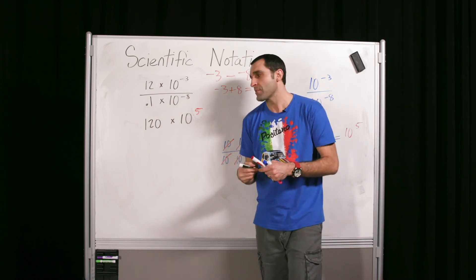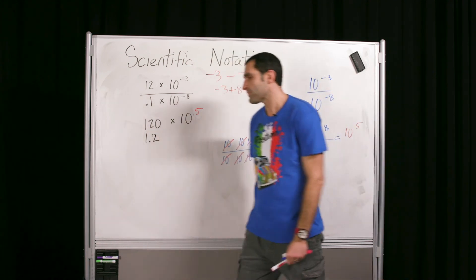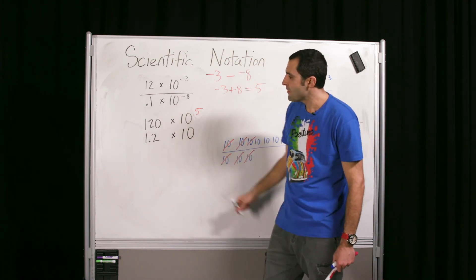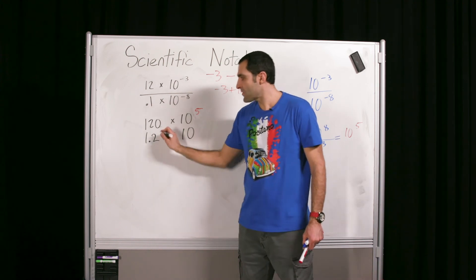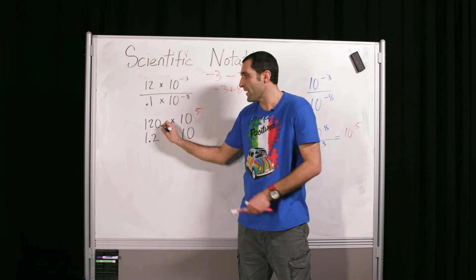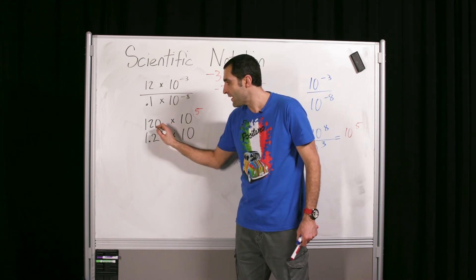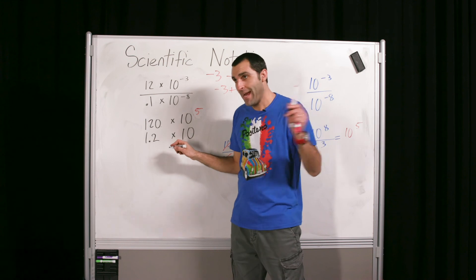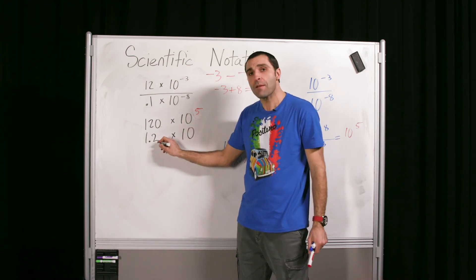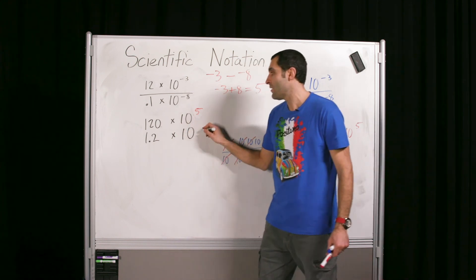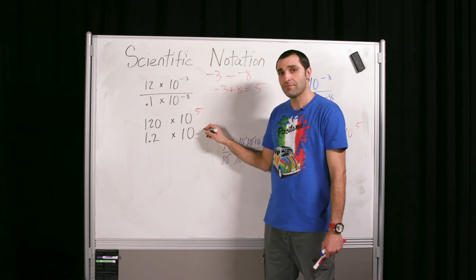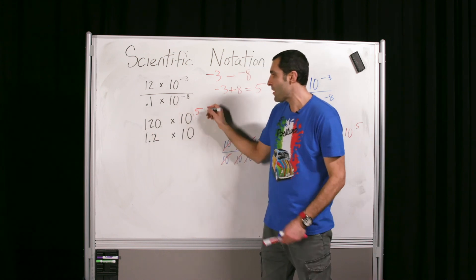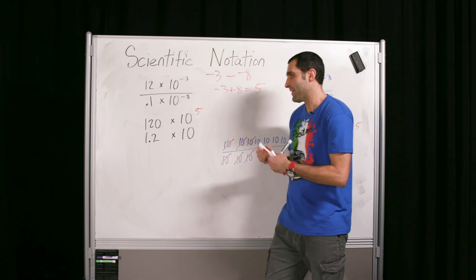Now, 120 is not in scientific notation, but 1.2 is — we don't need to say 1.20, same number. Times 10 to the... How many movements from 120 to 1.2? Two movements — two factors of 10 smaller. I just made this number smaller, so I have to make the exponent bigger by a factor of 2 for the two movements. Smaller down to 1.2, bigger up to 7. The answer is 1.2 × 10^7, and this problem is done.